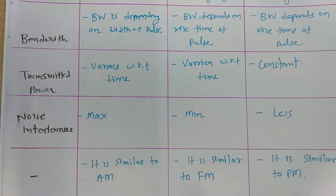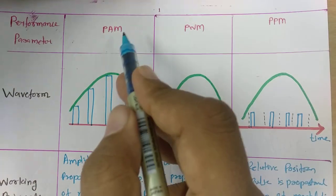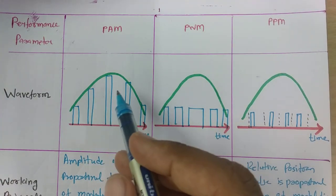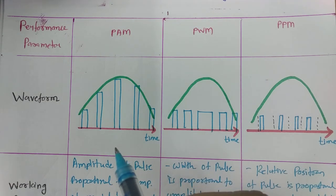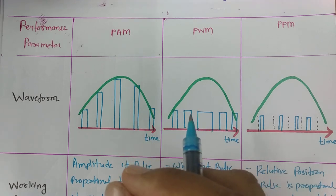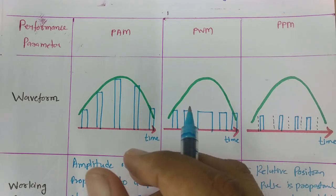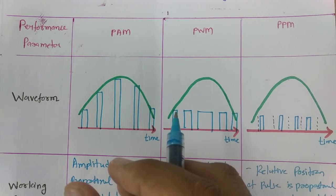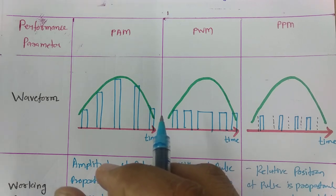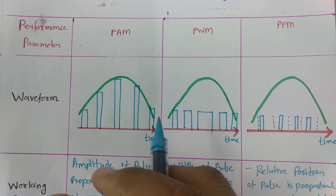So this is how pulse analog modulation techniques are comparable to analog communication. I hope that by this session you will be able to learn all the basics of Pulse Amplitude Modulation, Pulse Width Modulation, and Pulse Position Modulation. If you have more information or suggestions, you can write in the comments — your feedback will help other students and help me understand what is needed for future videos. Thank you so much for watching.